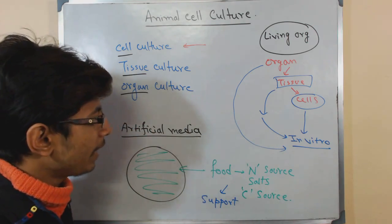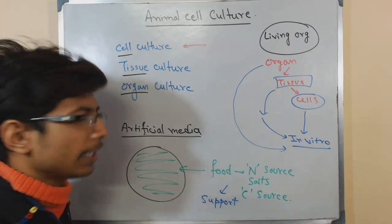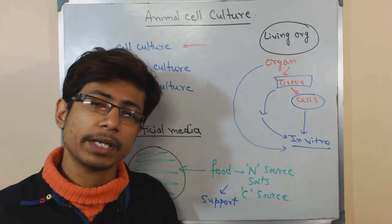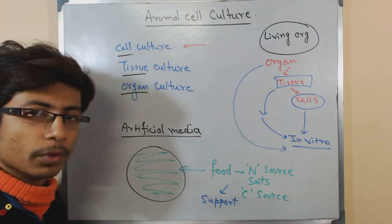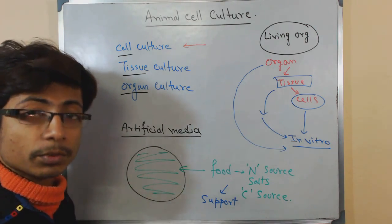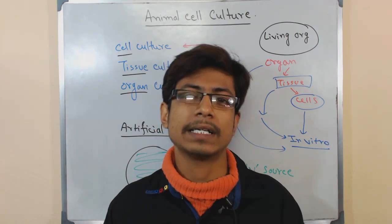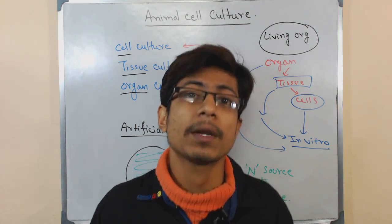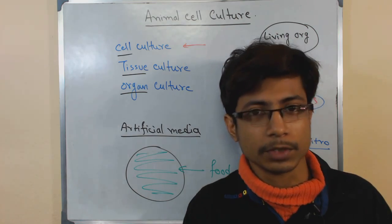In organ culture, continuous nutrient supply is provided by blood, which acts as a carrier for all these things in eukaryotic bodies. Now that we understand what cell culture, tissue culture, and organ culture mean, the next thing we want to know is: what are cell lines, what are cell strains, and what are the different types of cell culture available? We'll talk about those in the future videos.